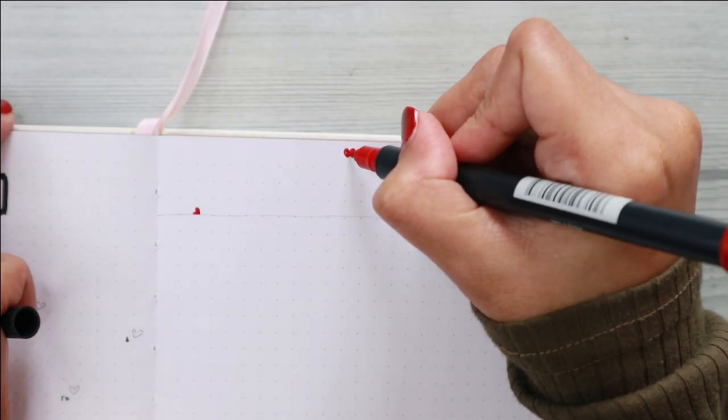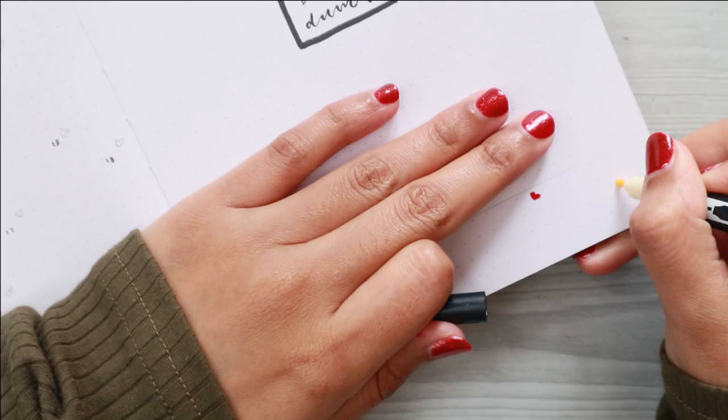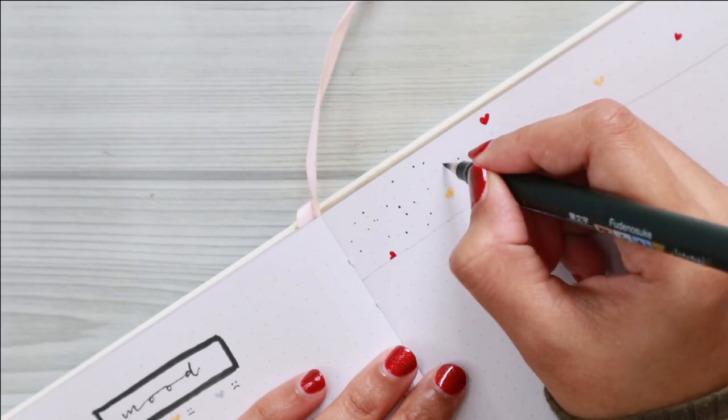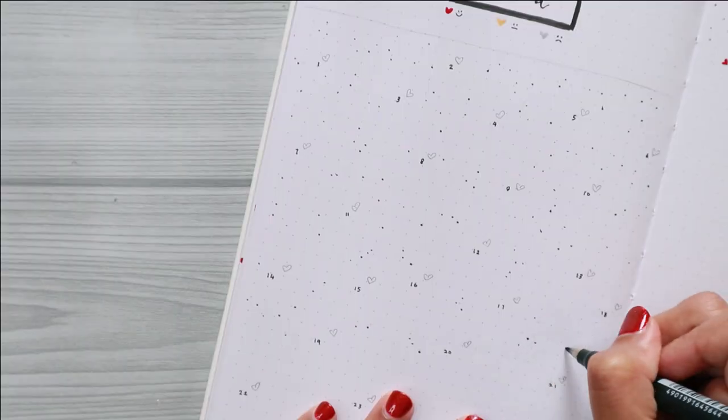I basically use a brain dump to help me clear and organize my thoughts. I don't usually do this in my regular bullet journal—I normally just take a piece of paper and write down everything. But I decided to include this one in my setup this month.